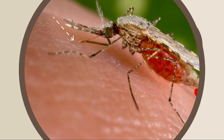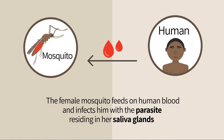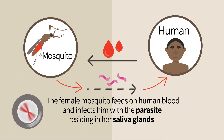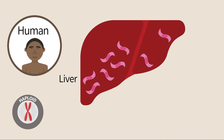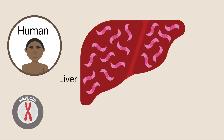The mosquito saliva contains anticoagulants that it injects into the human blood during feeding. When the mosquito is infected, the parasite enters the human blood with the saliva. It then moves from the blood into the liver, where it rapidly proliferates by mitotic divisions within a few days into tens of thousands of parasites.